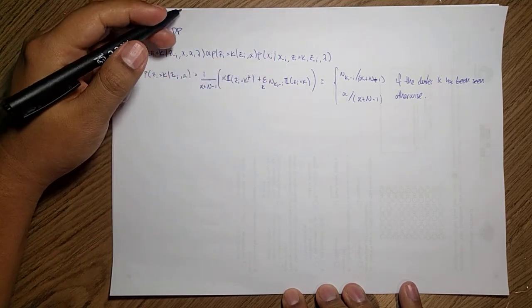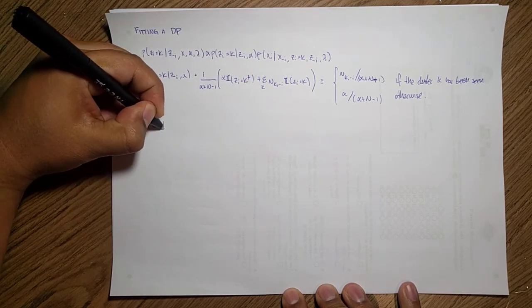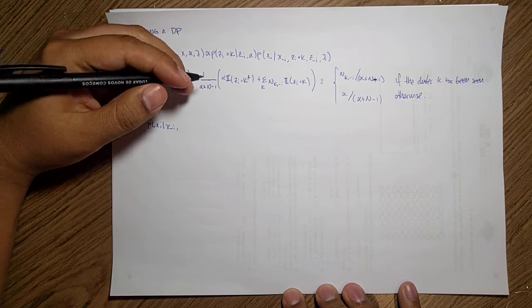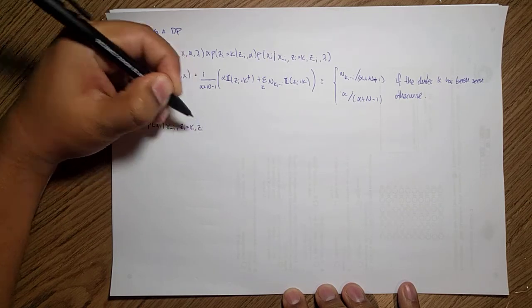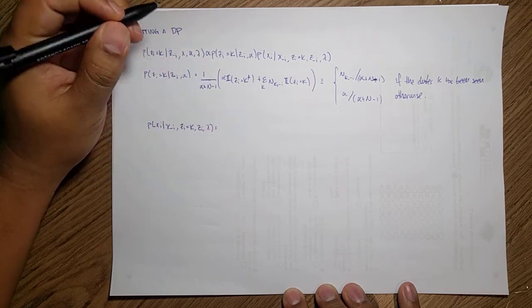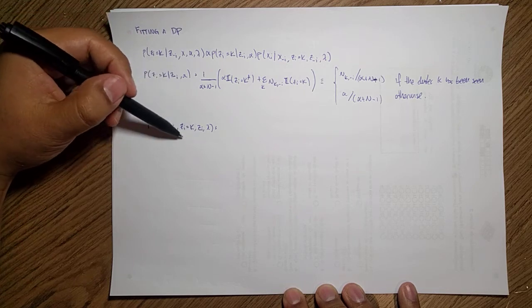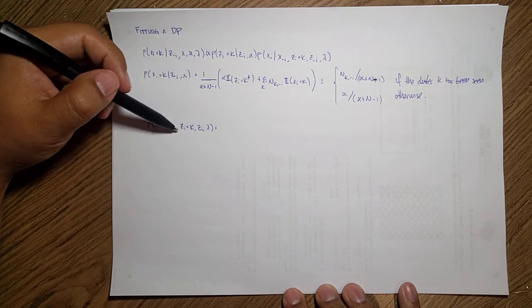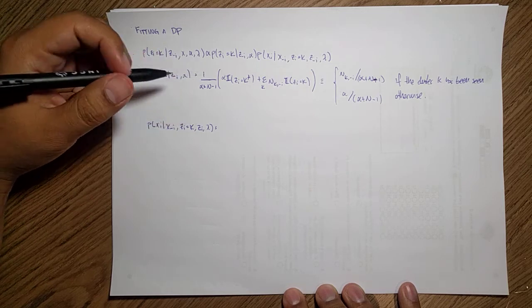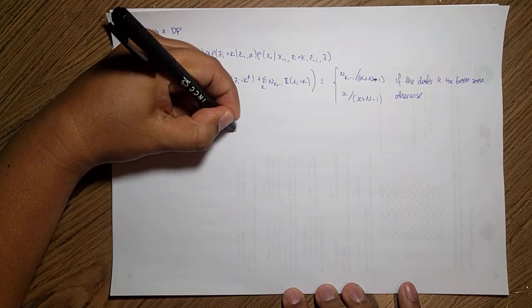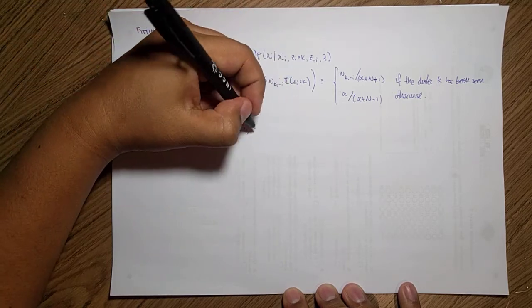The whole idea here again is just using the counts as likelihood and using our priors as a way of creating new clusters, avoiding the zero count when working with the Dirichlet processes. The second term here is our posterior predictive distribution of the cluster k.